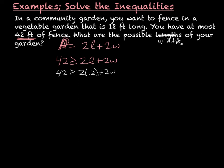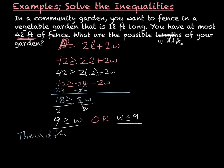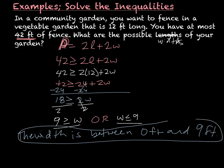Multiplying, forty-two is greater than or equal to twenty-four plus two W. Subtracting twenty-four: forty-two minus twenty-four is eighteen, which is greater than or equal to two times W. Dividing by two: nine is greater than or equal to W, or you may write W is less than or equal to nine — it doesn't matter which order you write it. The width is between zero feet and nine feet, because you can't have a negative width or a negative length. That is your final answer.